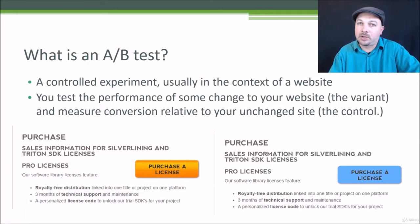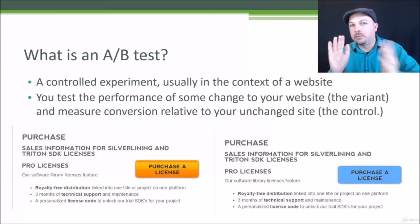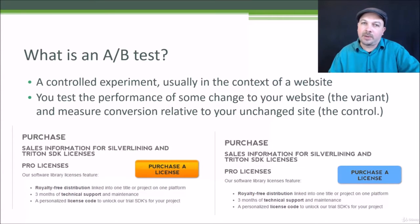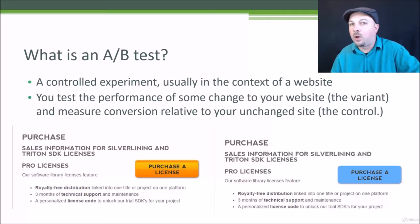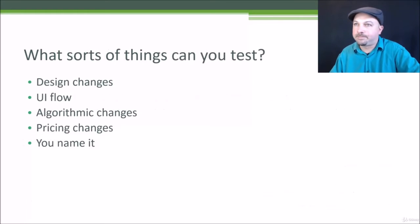An A/B test will actually split people up — some people see the orange button, some people see the blue button — and you can then measure the behavior between these two groups and make your decision on what color the button should be based on that data.